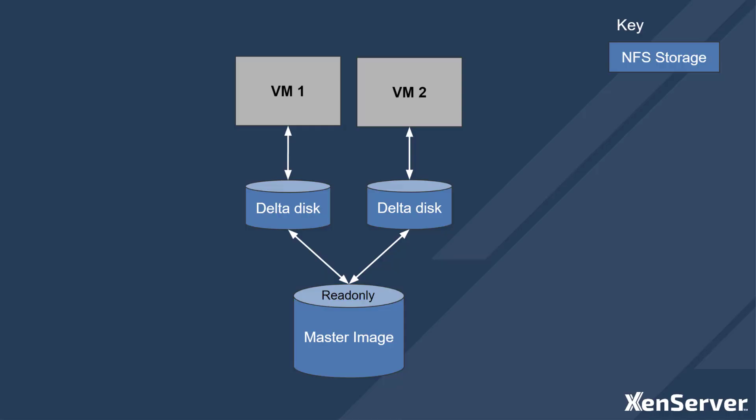The virtual machines created by MCS look like this. They share a common master image that is read-only, and each VM is attached to the master image by a delta disk that captures any updates made. IntelliCache automatically creates a cache structure using local storage for the caches. You can see the blue disks are on NFS storage, which is what is reflected in the XenCenter console when you examine the VMs. The caches are transparent and are not seen.